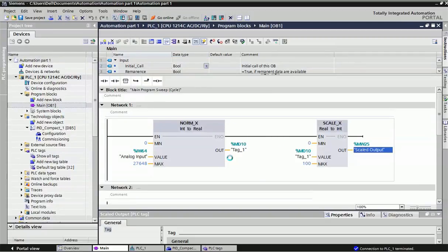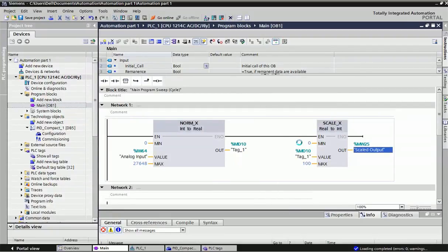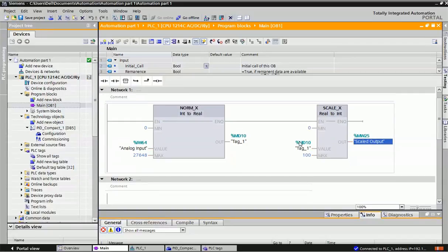Here you can see this analog value is changing according to the input. Linearly, the scaling output will change. The standard range is 4 to 20 milliampere. Here I have used the voltage port, so I am giving plus or minus 10 voltage. Here exactly we are not getting plus 10 voltage, so that's why it will vary from 27,648 - it is going beyond limit. That's why I am not getting exactly the scaled output here.